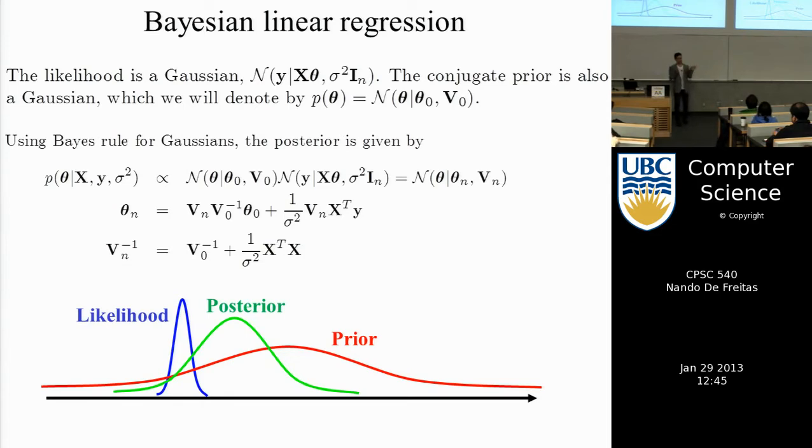Moreover, that Gaussian posterior, its statistics correspond to the statistics of things we've studied before. In particular, the mean of the posterior gives you back the ridge regression estimate, and when delta is zero, when the regularization coefficient vanishes, that takes you back to linear regression.